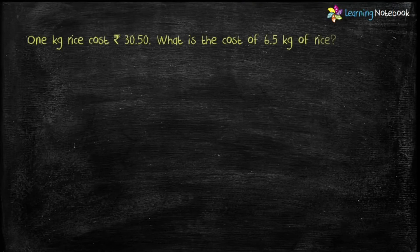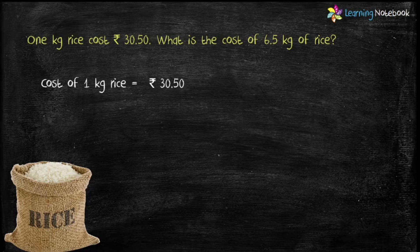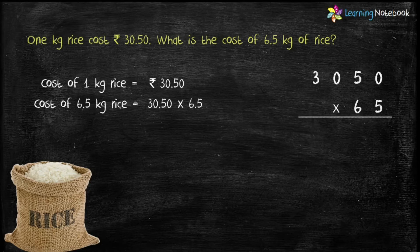Question 1: If 1 kg of rice costs rupees 30.50, what is the cost of 6.5 kg of rice? Let's solve it. Cost of 1 kg rice equals rupees 30.50. So cost of 6.5 kg rice equals 30.50 multiplied by 6.5. Let's first multiply these two decimal numbers without the decimal point.